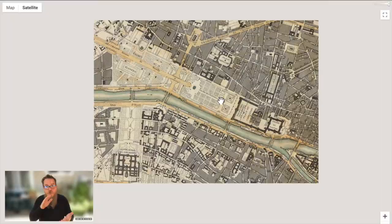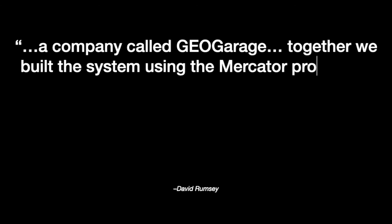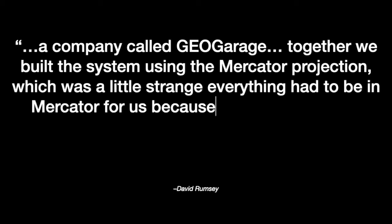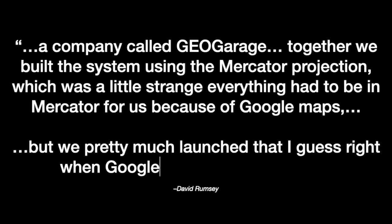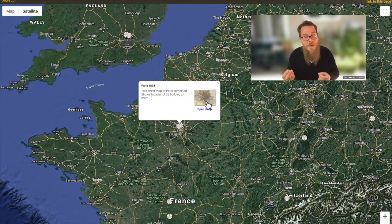A company called Geo Garage — together, we built the system of using the Mercator projection. Everything had to be in Mercator because of Google Maps, but we pretty much launched that right when Google Maps itself evolved. Even using Google Maps mashups with simple dots representing the locations of maps from the David Rumsey map collection at that time was an incredibly innovative use.